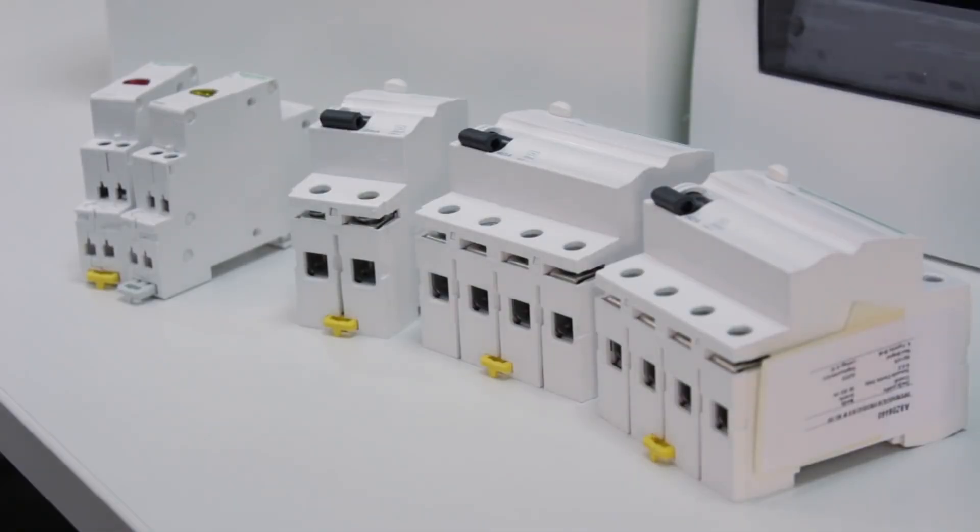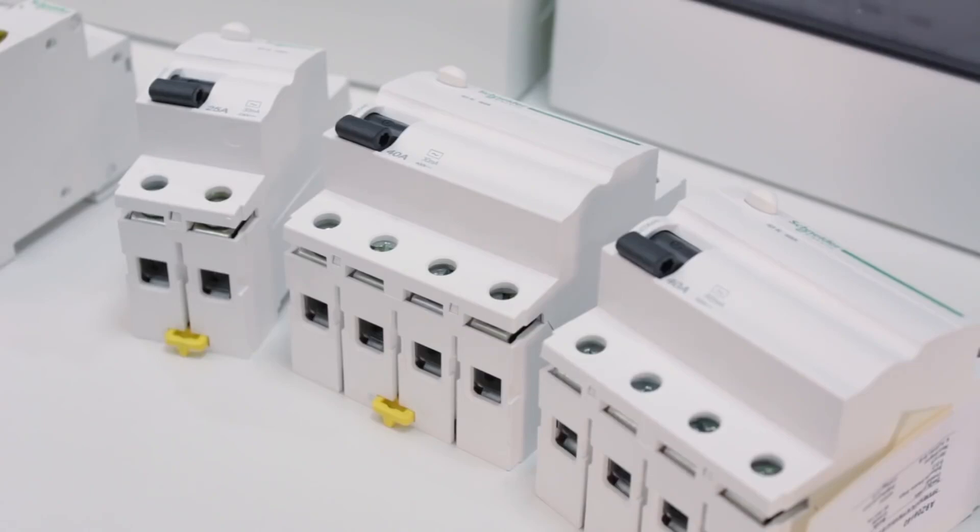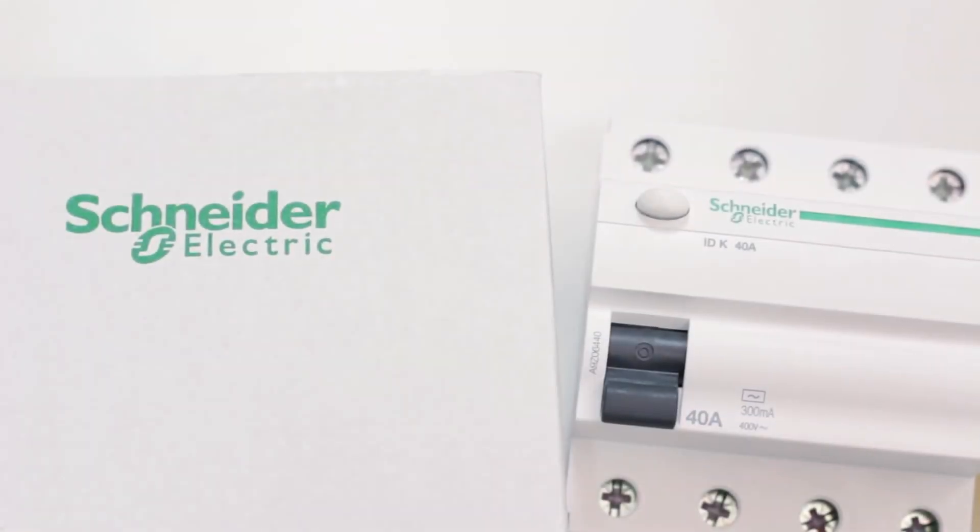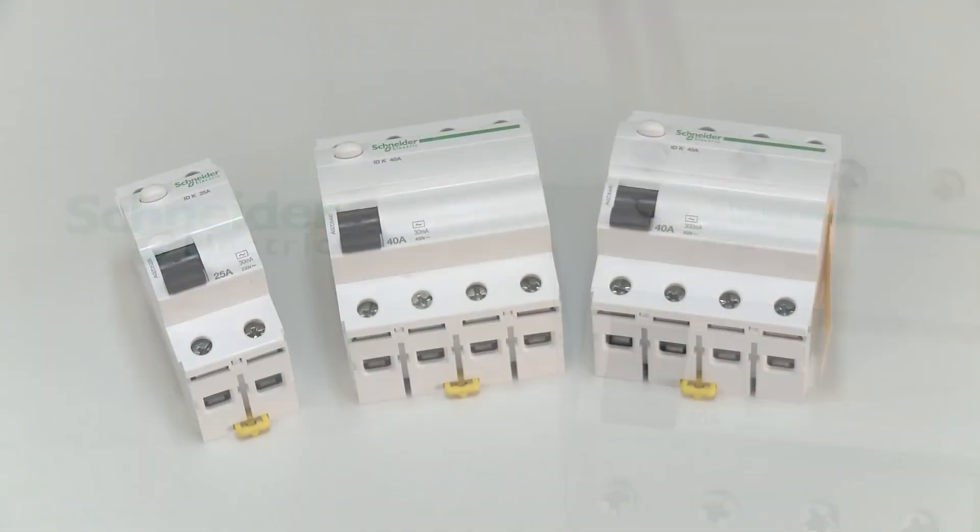The next protection device located in the enclosure is a residual current device or commonly known as RCD device. The main purpose of this device is to protect people from danger due to contact under voltage. There we see 4 pole or 3 phase and single phase RCD devices.